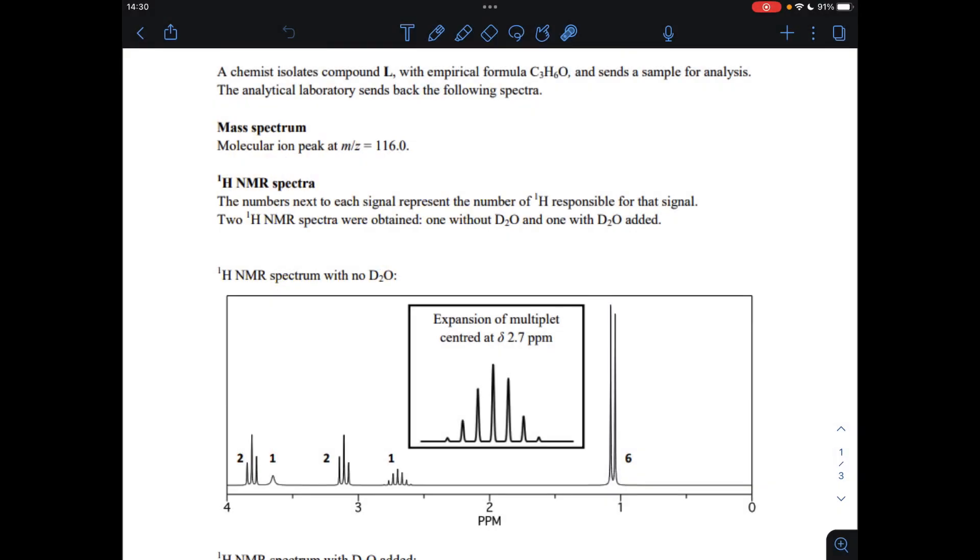We've got lots of information to process about compound L. We're told that the empirical formula is C3H6O, so the first thing I want to do is work out the MR of that. It's coming out at 58 and we're told that the molecular ion peak is at m/z 116, so that's the MR of the full molecule before it fragments. You can see that that is double that, so the molecular formula is obviously double this ratio.